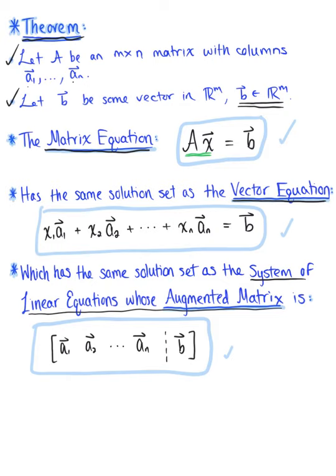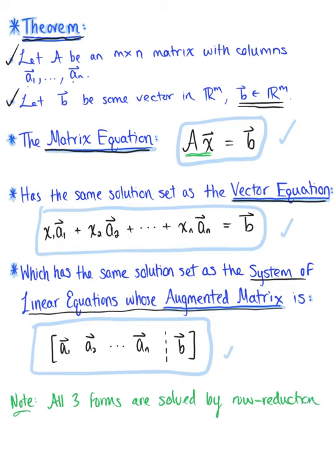One final note: these three forms — the matrix equation, the vector equation, and the augmented matrix — are all solved the same exact way. For now, we will always solve these systems using row reduction of the augmented matrix. That's what we'll really be focusing on for the rest of the semester.